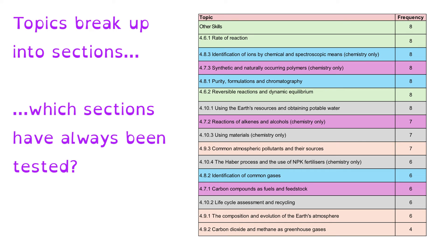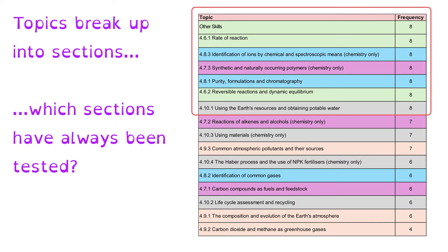The specification breaks each topic into subtopics, which you can identify from codes like 4.7.3. When we look at this table, we can see that six subtopics come up on every single paper, while some other topics at the bottom haven't been assessed anywhere near as frequently. So in the final few days before your exam, if you're not sure what to revise, looking at the things towards the top of this list is a really good start.